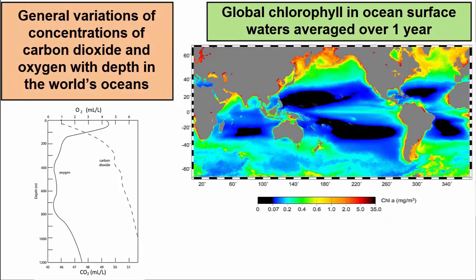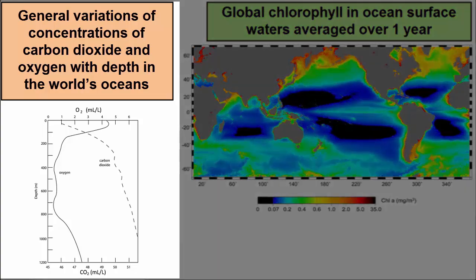Step 1: Read the title and caption of the visualization. What do they claim we are seeing? For example, this graph is showing general variations of the concentrations of carbon dioxide and oxygen gas with depth in the world's oceans.